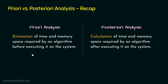We learned in the last lecture what is the meaning of estimation of time. The estimation of time is the same as the estimation of number of CPU computations. And the estimation of memory space is the same as the estimation of main memory space. We estimate the main memory space because the CPU interacts with main memory directly in order to execute an algorithm.